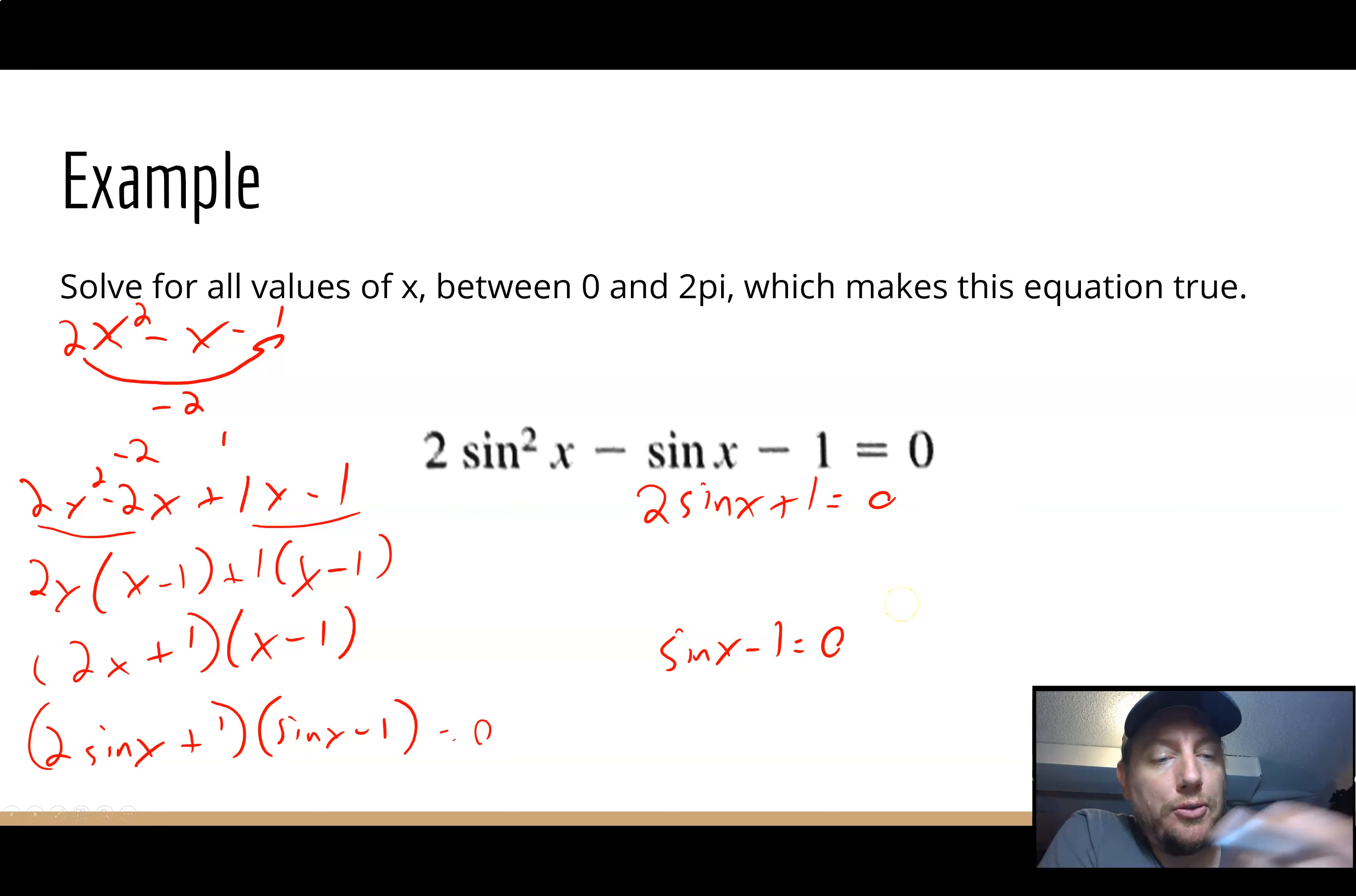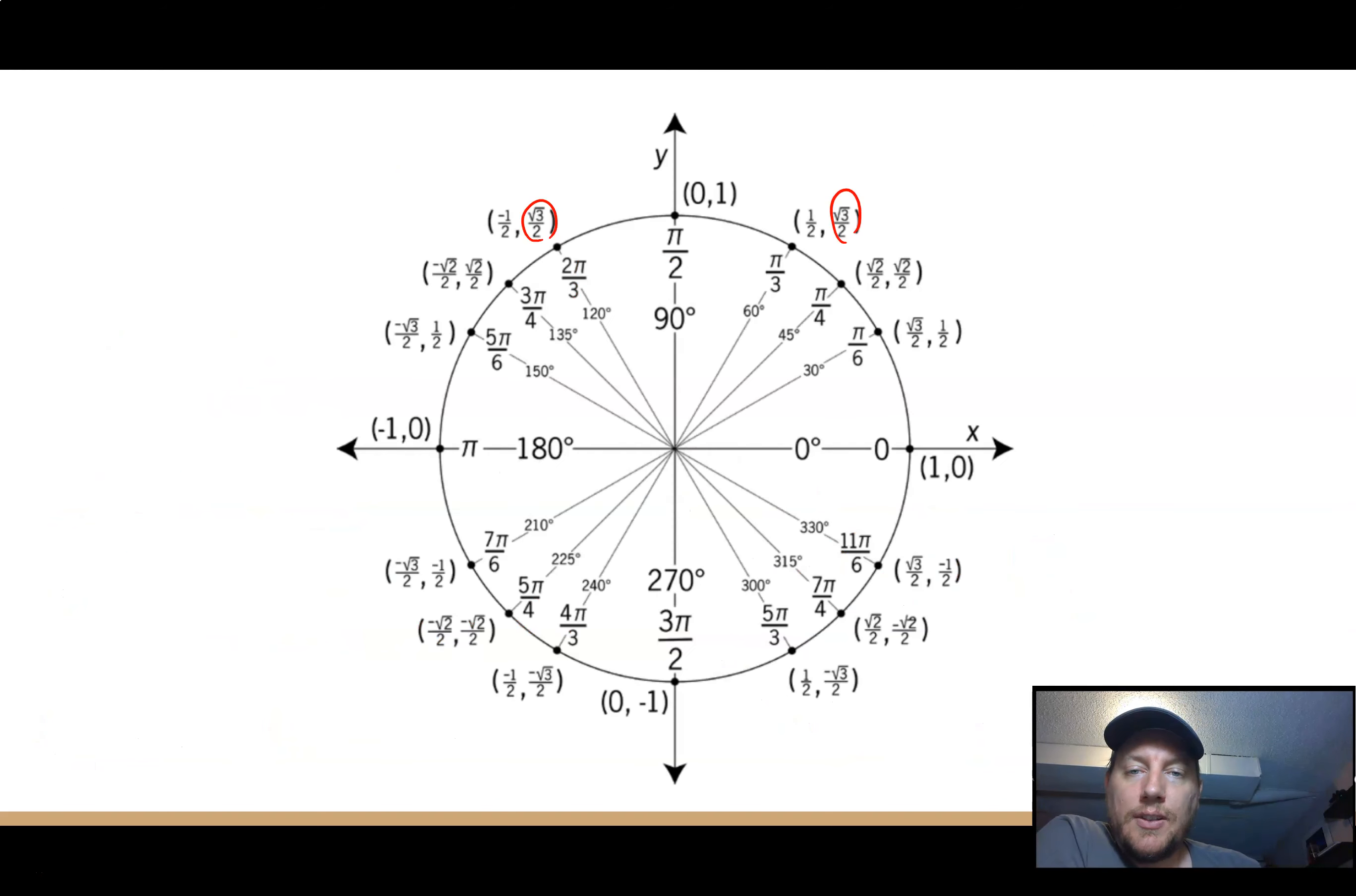And now we set each of the individual parts equal to 0 and solve them individually. So here's where we do what I was doing in the previous slides. So minus 1 divided by 2, -1/2. So I want the inverse sine of -1/2 over here. Just add the 1 to the other side. So sin(x) = 1, so x = inverse sine of 1.